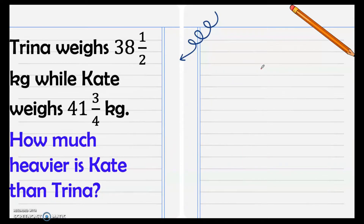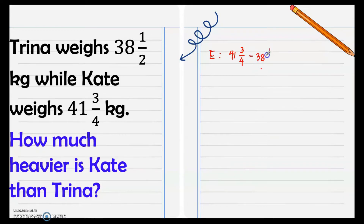Next, Trina weighs 38 and one-half kilograms while Kate weighs 41 and three-fourth kilograms. How much heavier is Kate than Trina? This problem involves subtraction of fractions. Following the SM method, our equation is: 41 and three-fourth minus 38 and one-half equals n. We know it is subtraction because the question asks how much heavier Kate is than Trina.